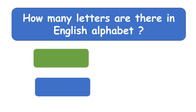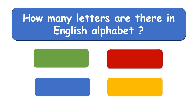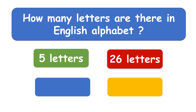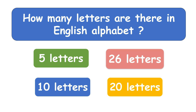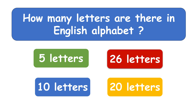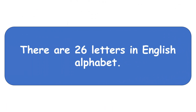How many letters are there in the English alphabet? Twenty-six letters. There are twenty-six letters in the English alphabet.